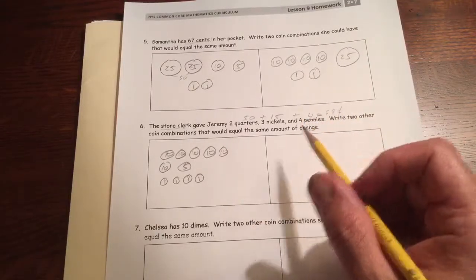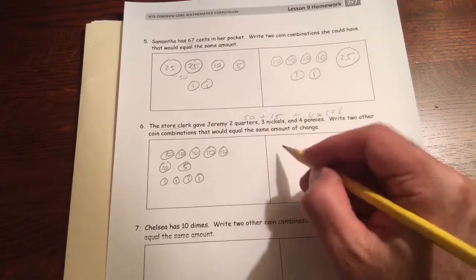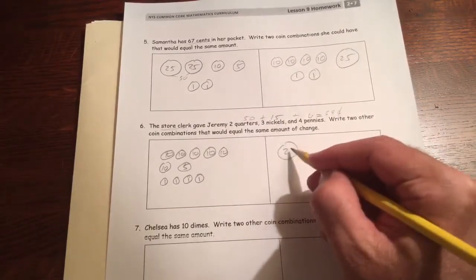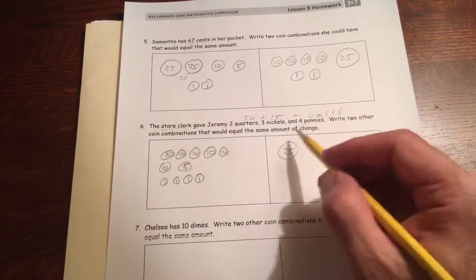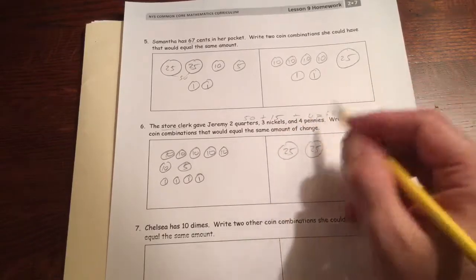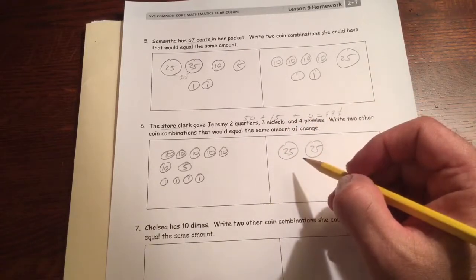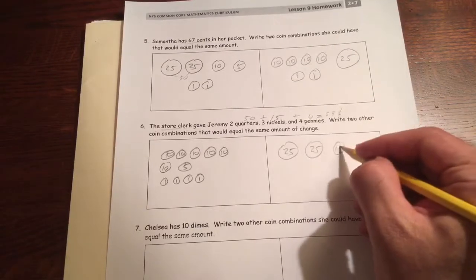Another way you could do it, and so now we can't use it with two quarters. We could try it with one quarter here. 25. Well, actually we could do it, we could do two quarters. 25. We just can't use three nickels. So we have the two 25's, that's 50. A dime for 60.